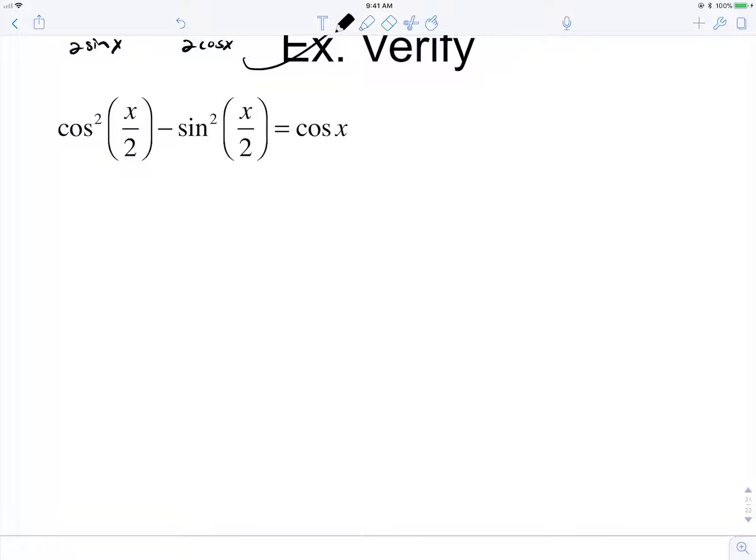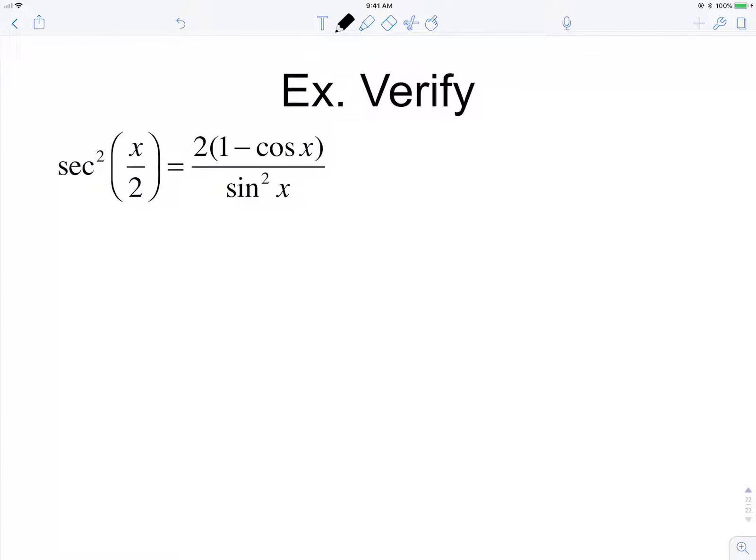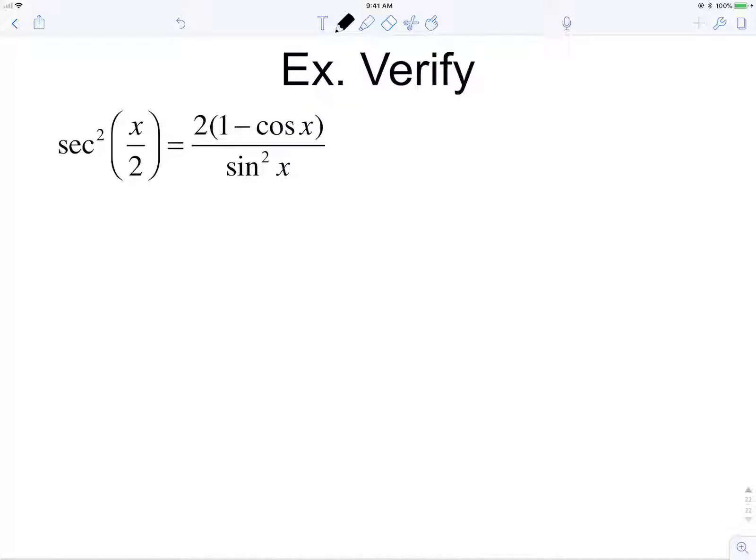For this next one, it would be helpful to recognize that cosine squared minus sine squared is actually equal to cosine of 2x. It's a double angle identity. So since the angle in this case is x over 2 on the left-hand side, this will be cosine of 2 times the angle x over 2, which is just cosine of x.